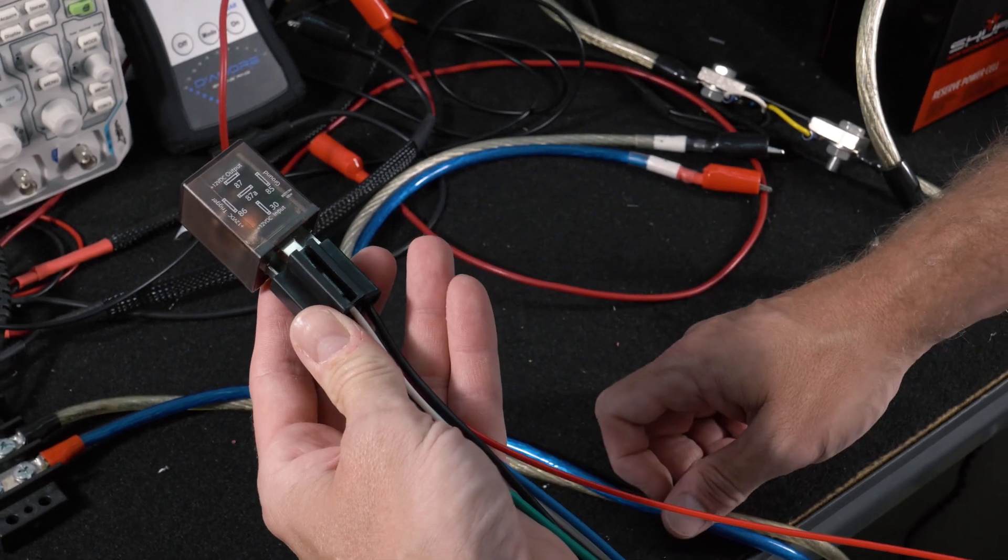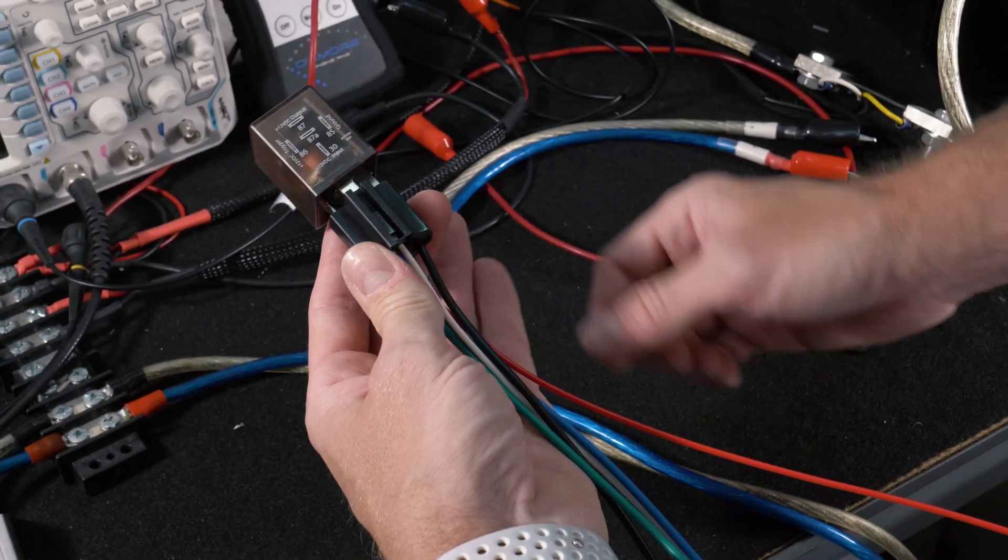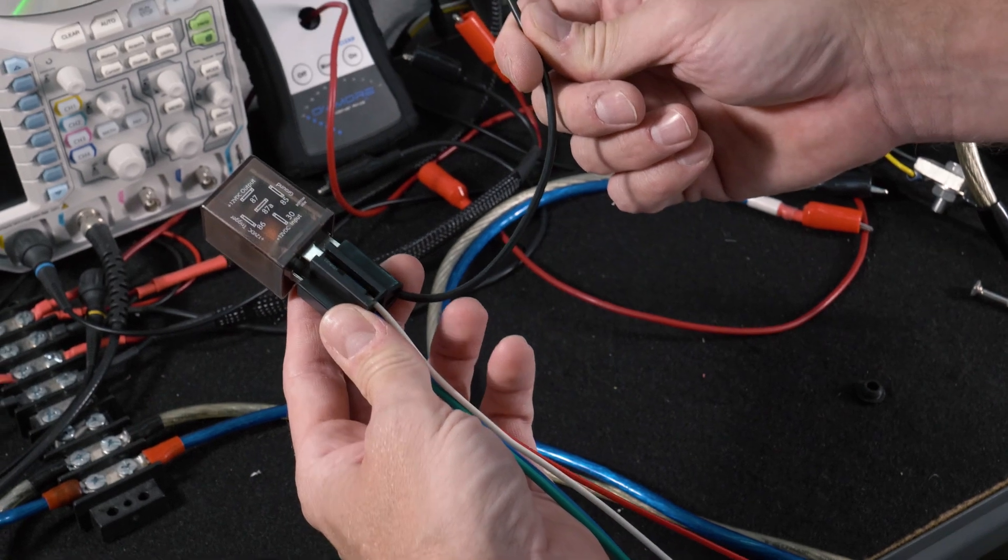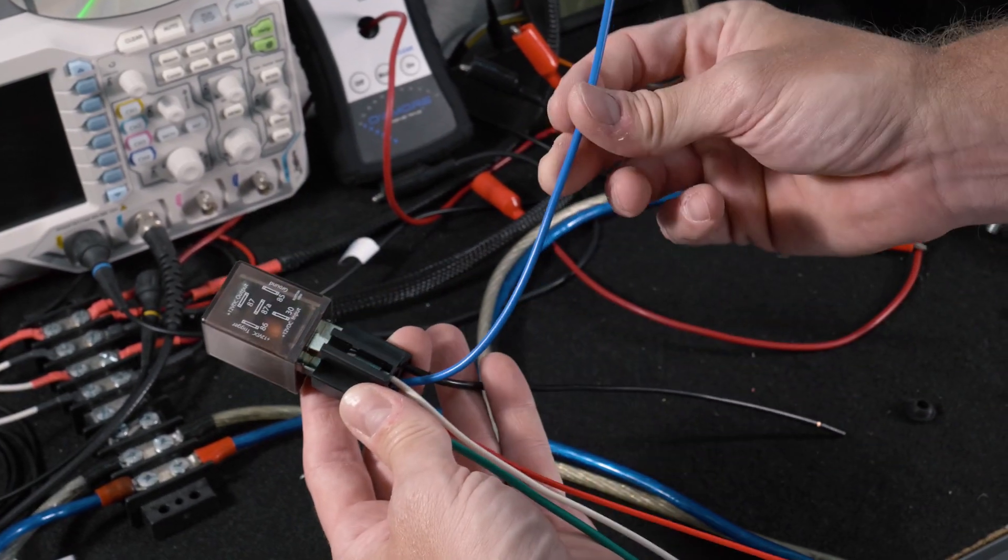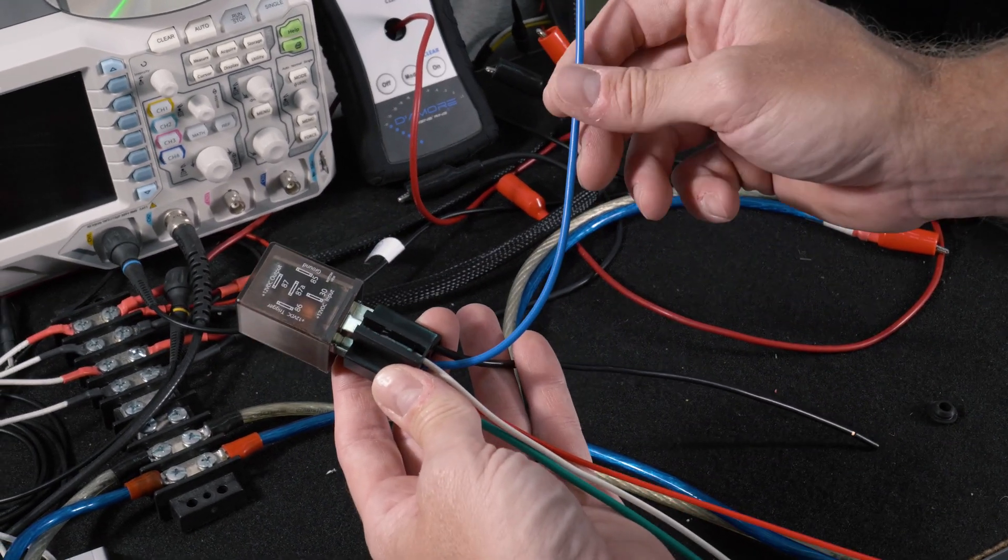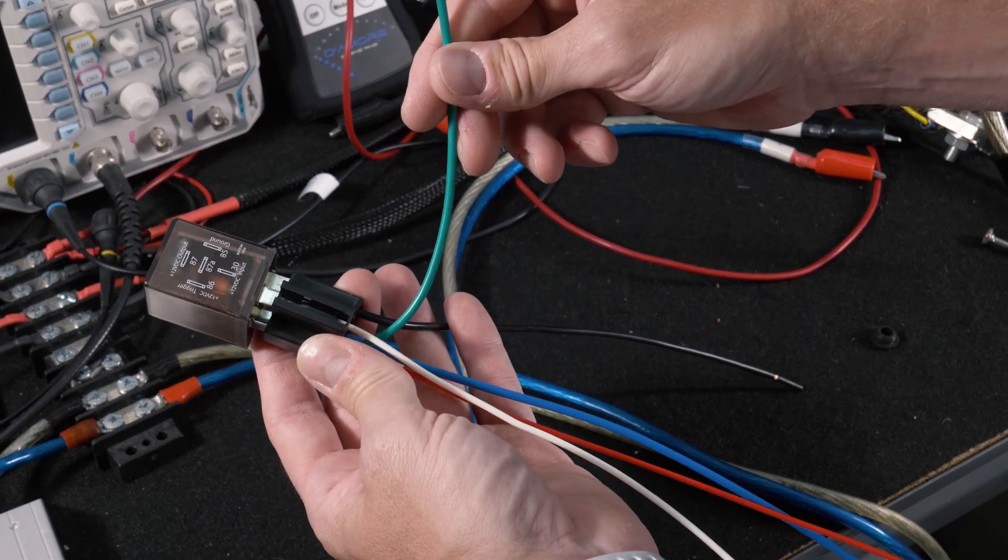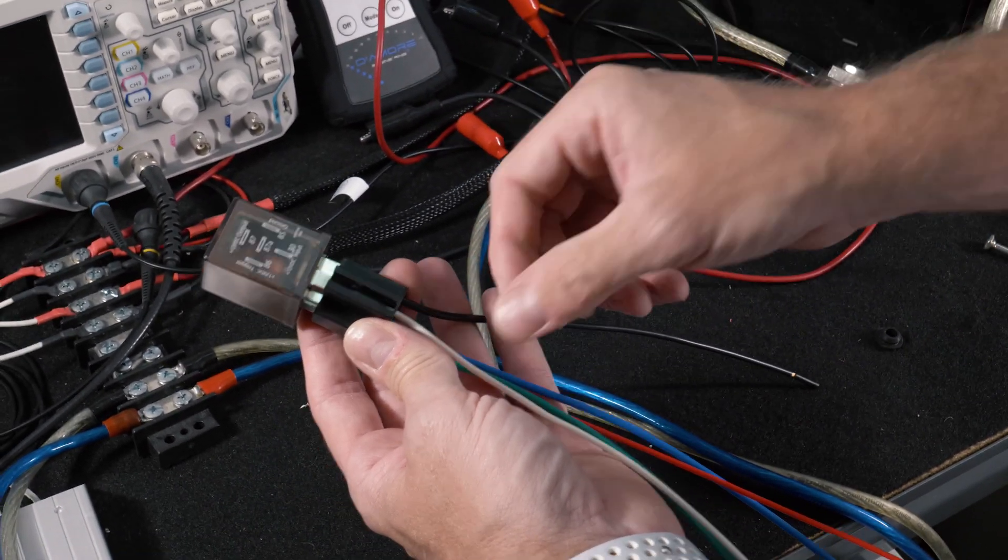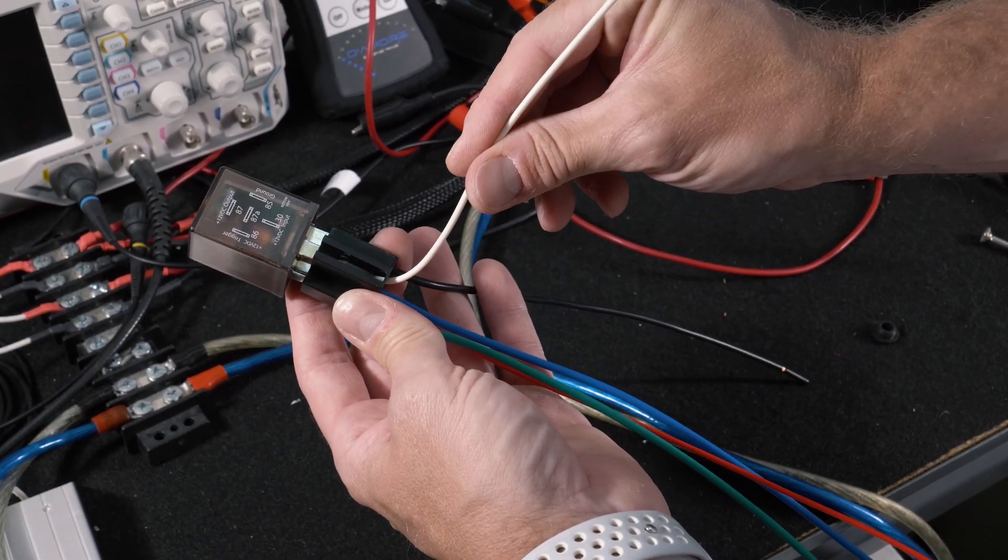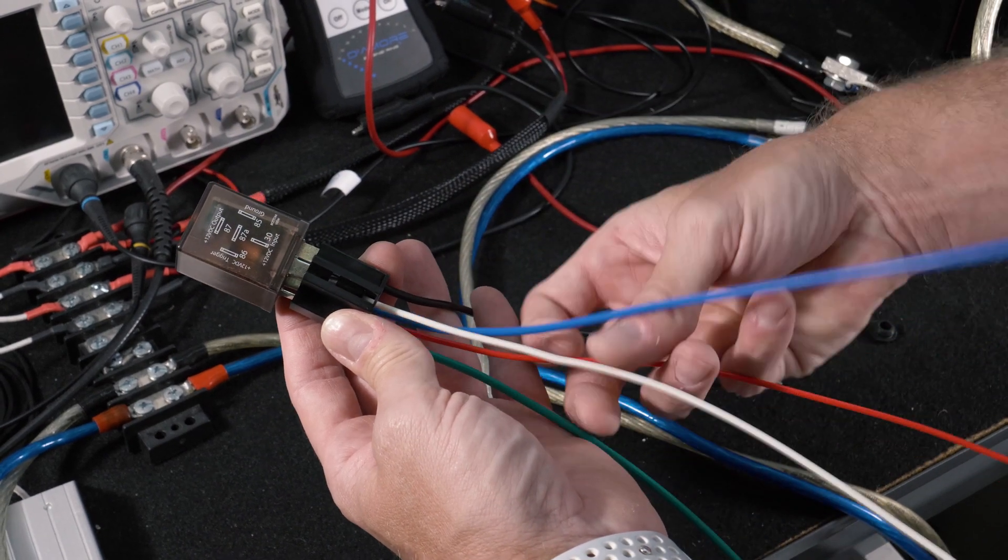And pin configuration would be exactly the same as the 509TD. So we have our 12 volt power input, we have our normally closed contact, our normally open contact, our ground, and our trigger.